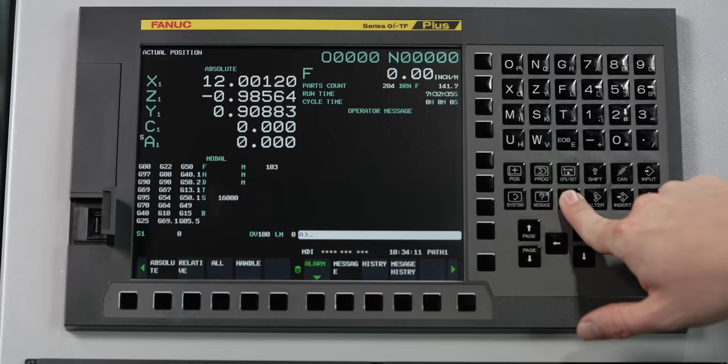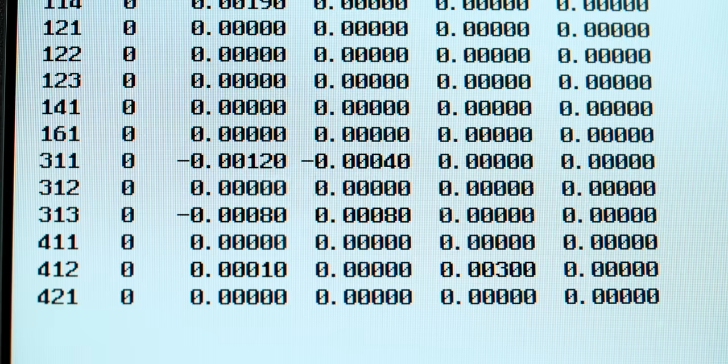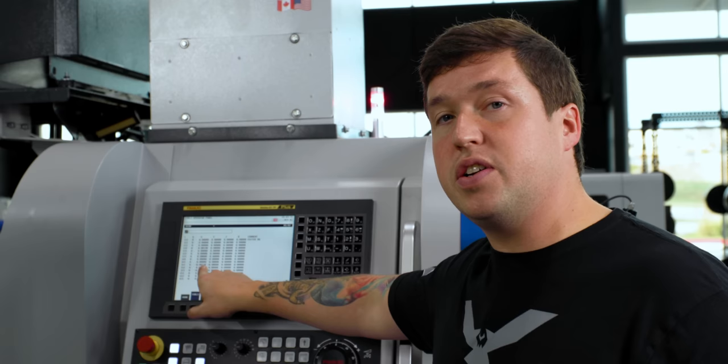And after I got the results back from the customer this is how much I had to move my holders to be exactly on center. The biggest number here on this screen is a thousandth and two tenths but that's an X which is diametrical so it's actually half that. It's only six tenths off and it is really incredible to me how close this really was. You know what else is incredible to me? You Ben Jackson.